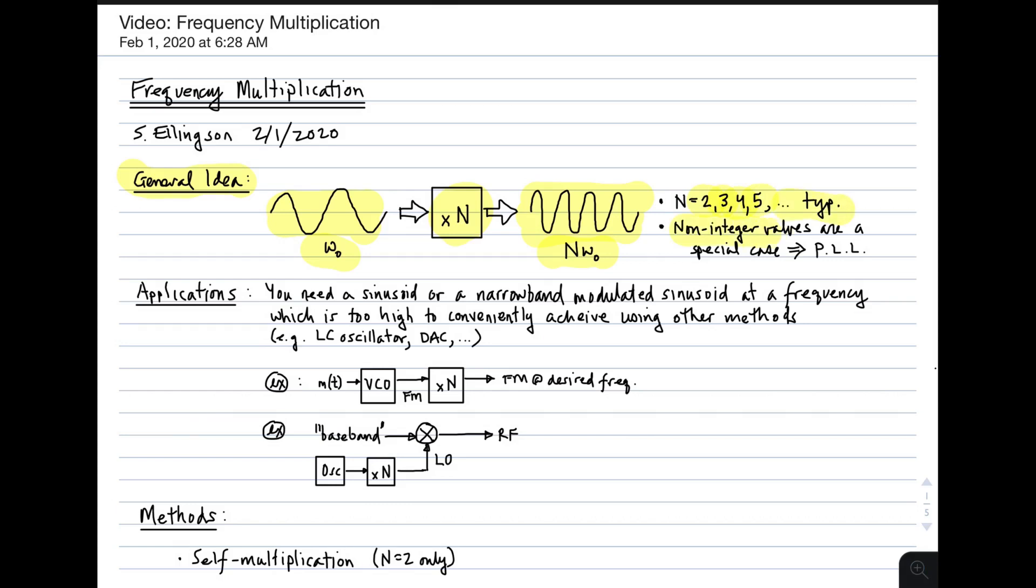And non-integer values are certainly possible, but they're a special case, and usually that requires something like a phase-locked loop, which I'll probably mention several times in this lecture, but not part of the scope of this particular lecture.